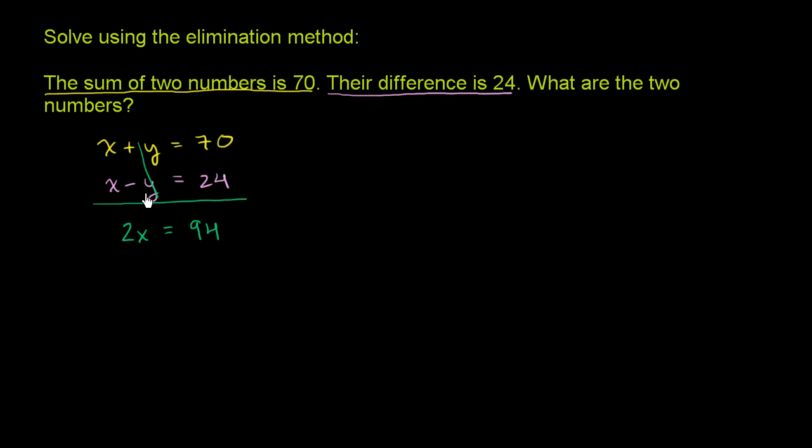I want to make it very clear that this process of adding the equations to each other is nothing new. We're really just adding the same thing to both sides of this equation. We're adding 24 to both sides. Over here, we're explicitly adding 24 to the 70. And over here, we could add 24 to x plus y, but the second constraint tells us that x minus y is the same thing as 24. So we're adding the same thing to both sides.